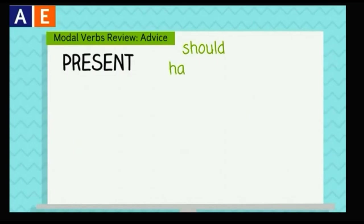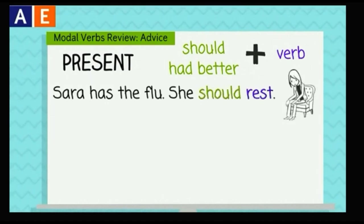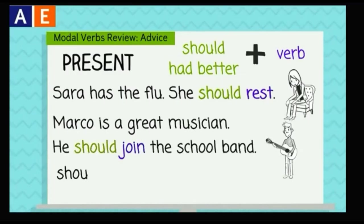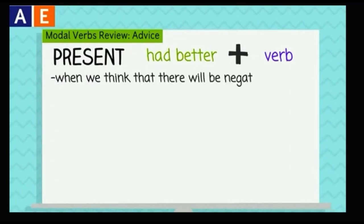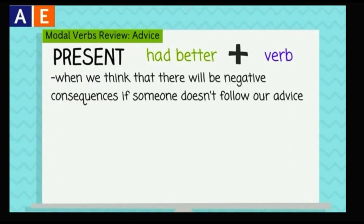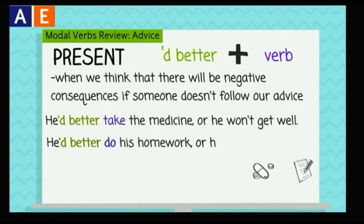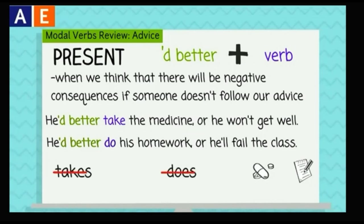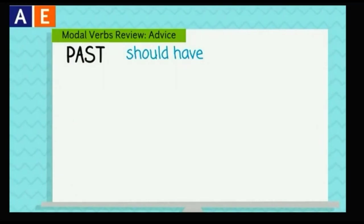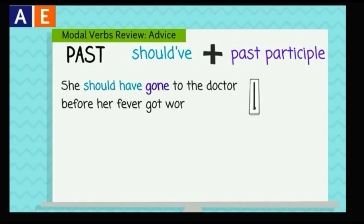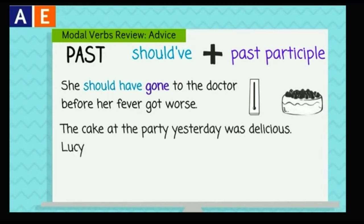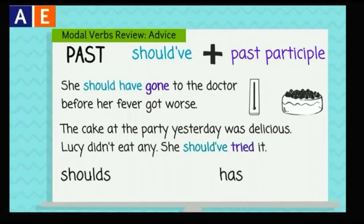'Should' is a modal verb and 'had better' is a semi-modal verb. They don't change form and they are followed by another verb. Sarah has the flu — she should rest. Marco is a great musician — he should join the school band. Notice that 'should rest' and 'join' don't take the third person singular 's.' We use 'had better' when we think there will be negative consequences if someone doesn't follow our advice. In spoken American English we often use the contractive form: 'he'd better take the medicine or he won't get well,' 'he'd better do his homework or he'll fail the class.' For advice in the past we use 'should have,' followed by the past participle. She should have gone to the doctor before her fever got worse. The cake at the party yesterday was delicious — Lucy didn't eat any; she should have tried it.